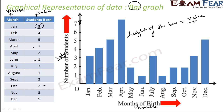Using this bar graph, if I want to know which month had the maximum number of students born, I can easily see from the graph that April is the month with the maximum. For the minimum, I can see that June and August both have height one — they are the minimum. For any month, like July, I can immediately say three students were born. Data representation is much better, and information can be extracted much faster.